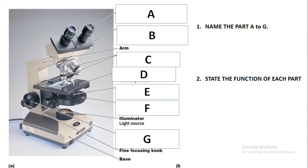Take note that a light microscope cannot view everything. As previously stated during the study of cells, an important structure that cannot be viewed using a light microscope is a ribosome. Ribosomes cannot be viewed because of the lower resolving power of the light microscope. The resolving power of a light microscope is 0.2 micrometers, which means we cannot view anything smaller than that using a light microscope.